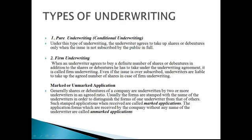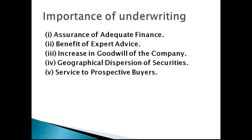The next topic is marked or unmarked applications. Generally, SAS or Depengers of a company are underwritten by two or more underwriters in an agreed ratio. Usually the forms are stamped with the name of the underwriters in order to distinguish the forms of one underwriter from that of others. Such stamped applications when received are called marked applications. The application forms which are received by the company without any name of the underwriter are called unmarked applications.